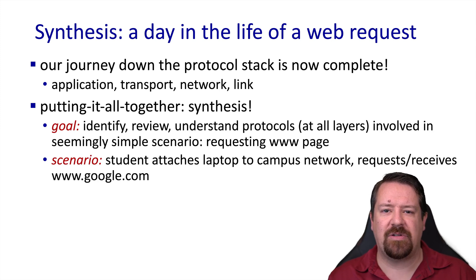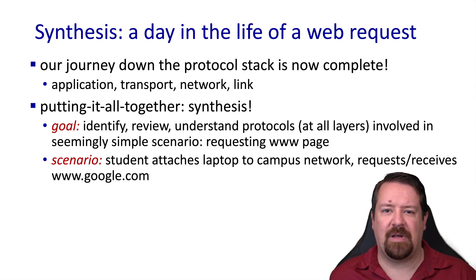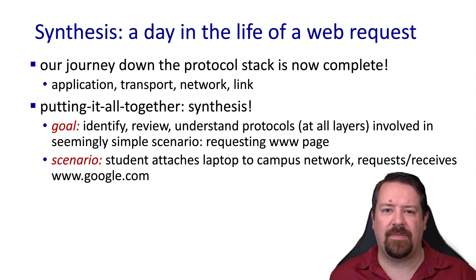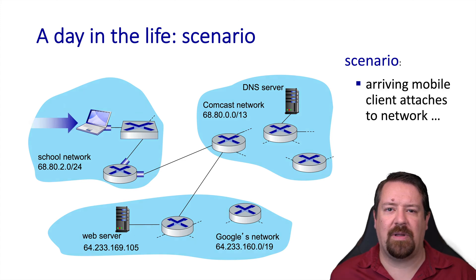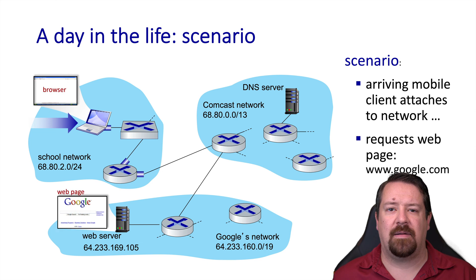The goal here is just to tie together everything we've looked at so far into one big picture. Our scenario is that a student is bringing their laptop and connecting it to the campus network before connecting to a search engine. Remember the internet is a network of networks, so we have our school campus network connected to an ISP, which in turn is connected to Google's network. So our mobile laptop arrives and connects to the campus network, it requests a web page, and it can display the search engine's homepage.